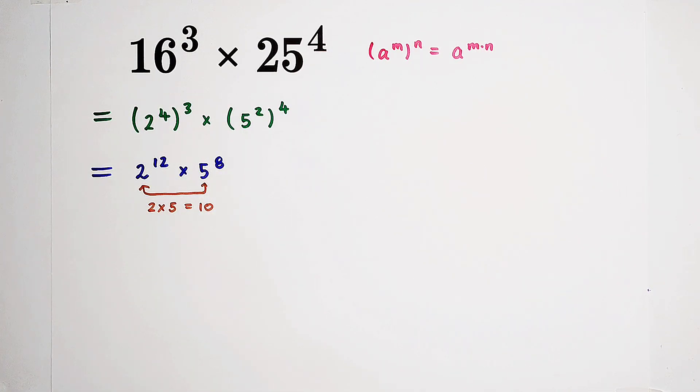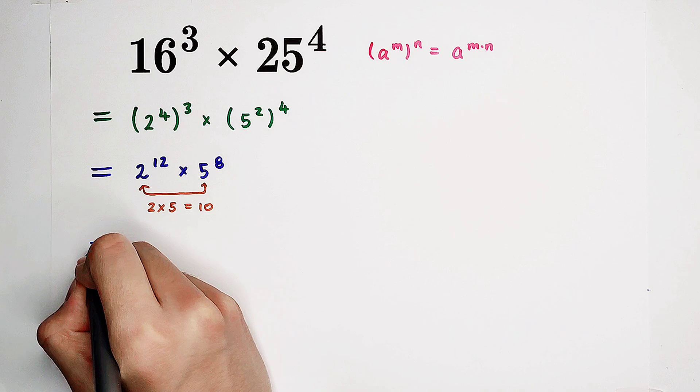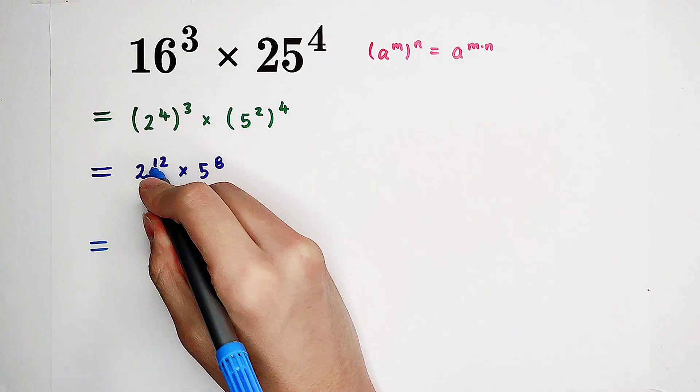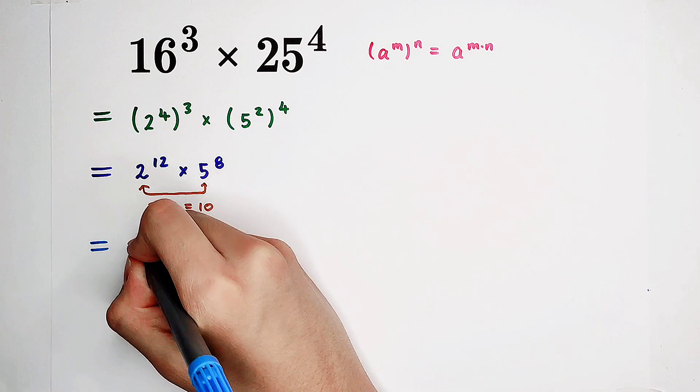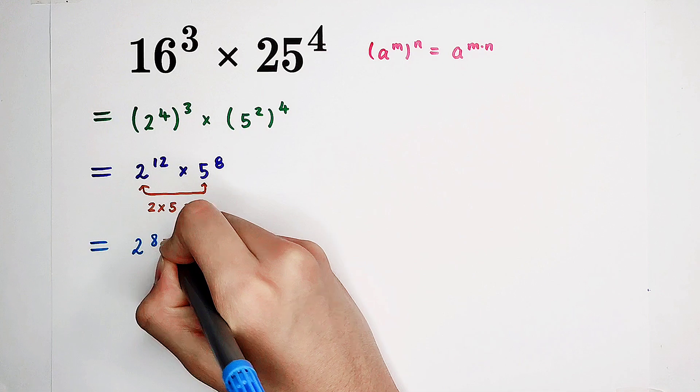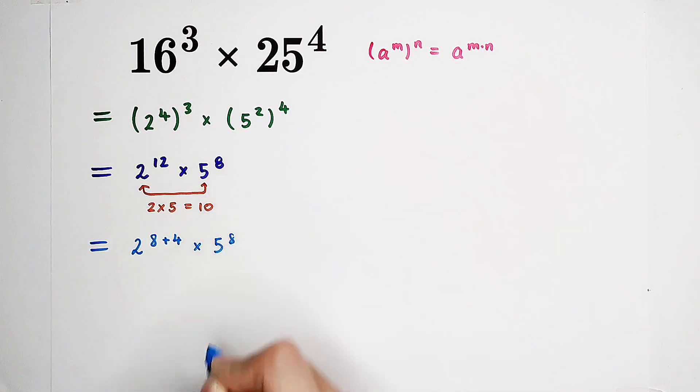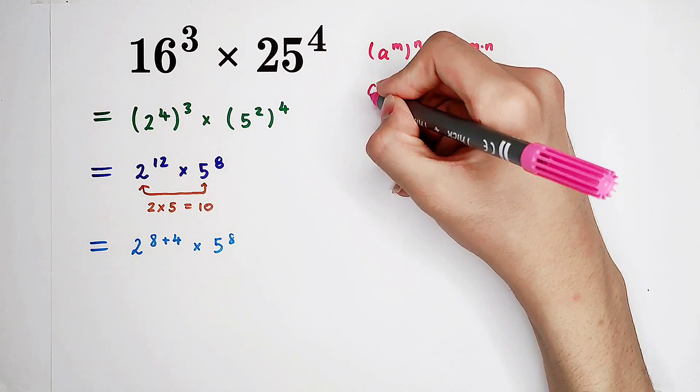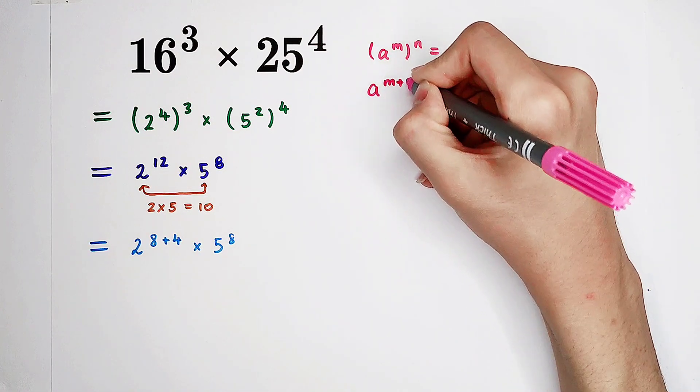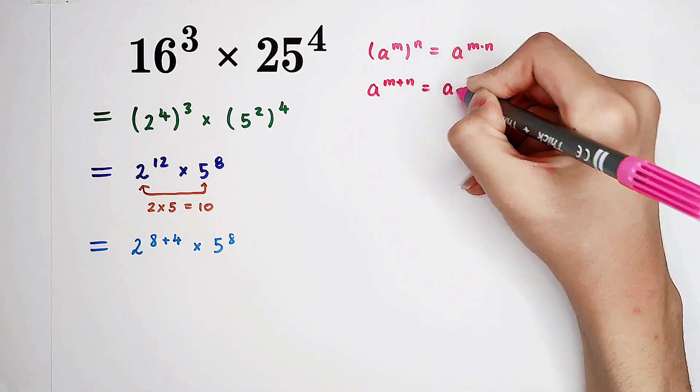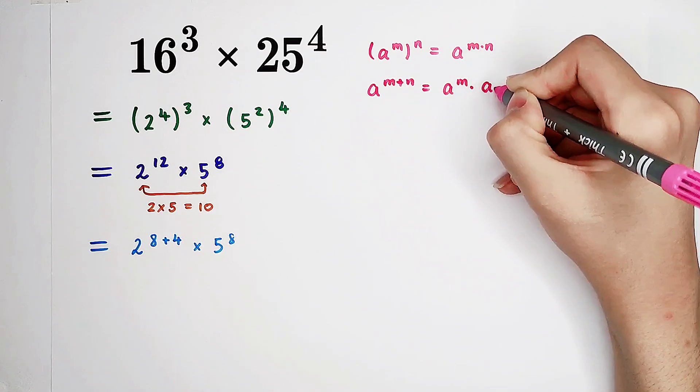How can that be true? Now, this 12 can be written as 8 plus 4. And we have the formula a to the power of m plus n equals a to the power of m times a to the power of n.